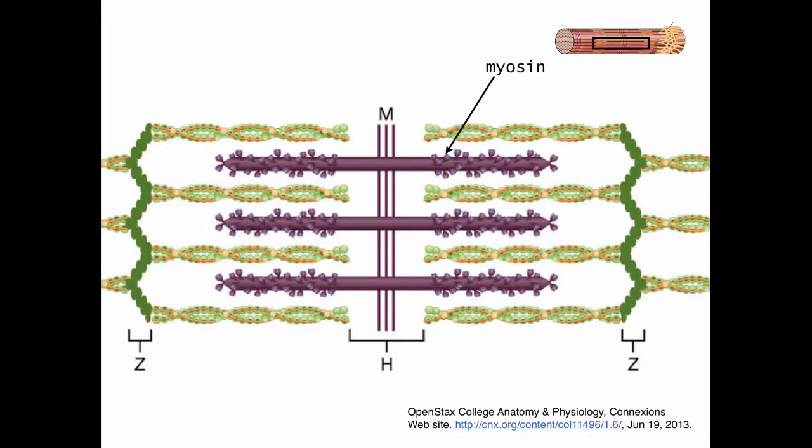There are a number of important proteins you need to know. First is myosin, which forms the thick filament. The second is actin, which forms the thin filament. In addition, there's two other proteins: one being troponin, which will bind to calcium, and the second being tropomyosin, which blocks the active site on actin. We'll cover these in more detail in this video.